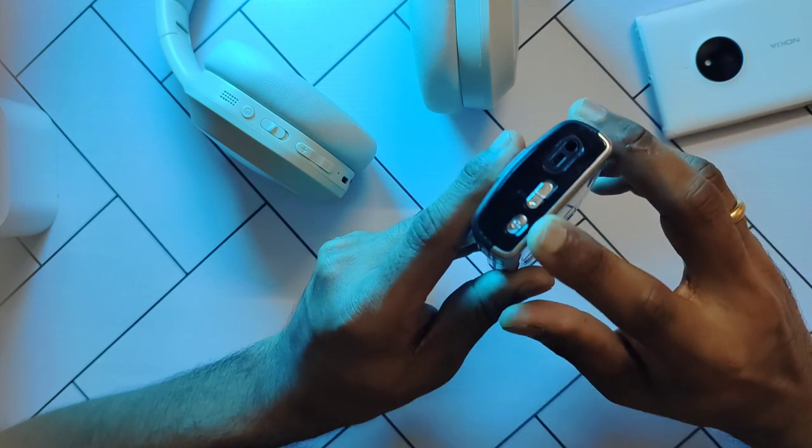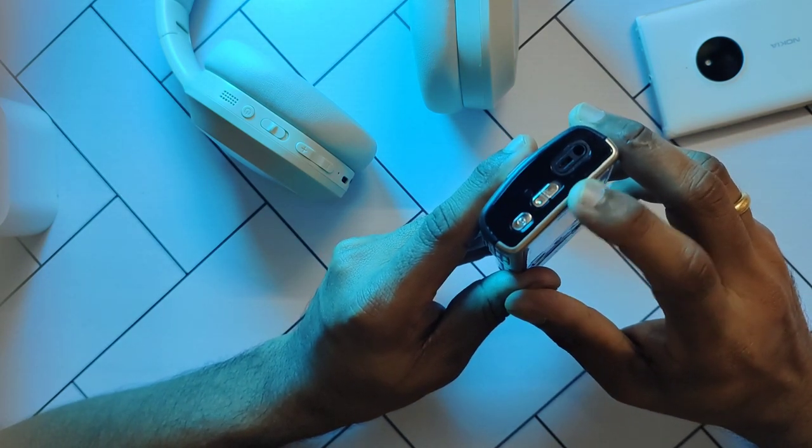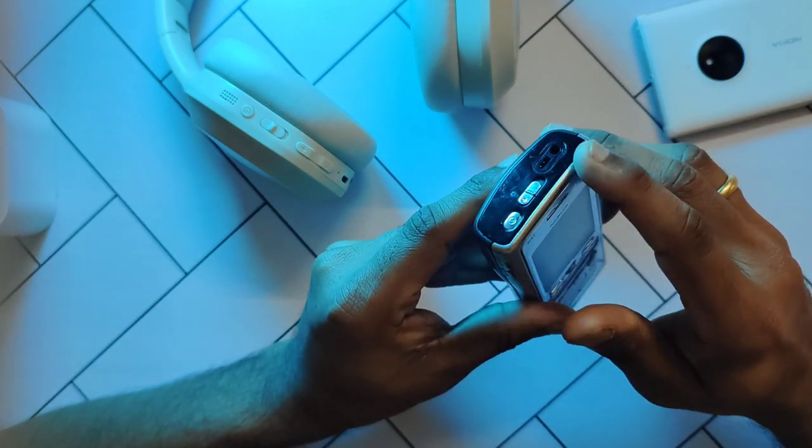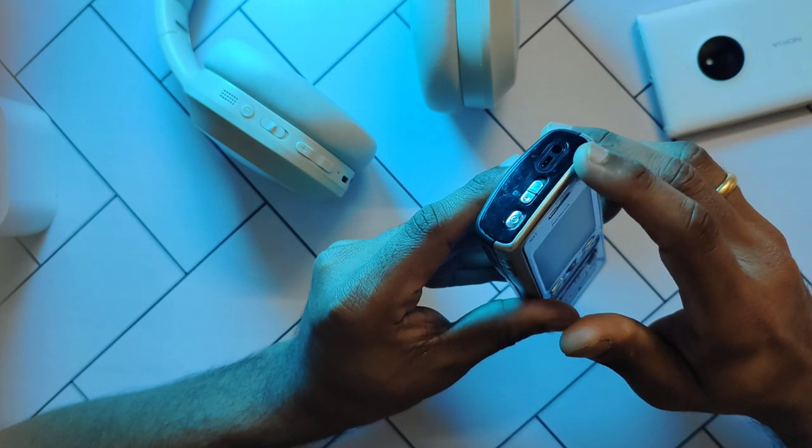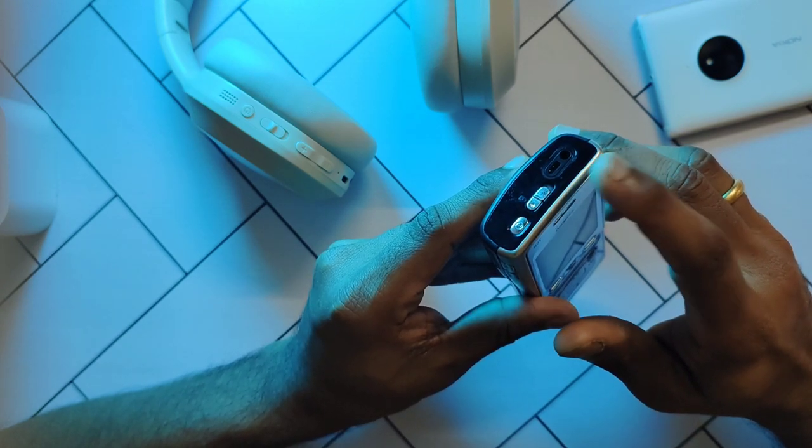So on the top here, you've got a power button, a dedicated lock and unlock button. You've got this 3.5mm headphone jack, a first for the N series along with a slot that houses the remote for the music playback.